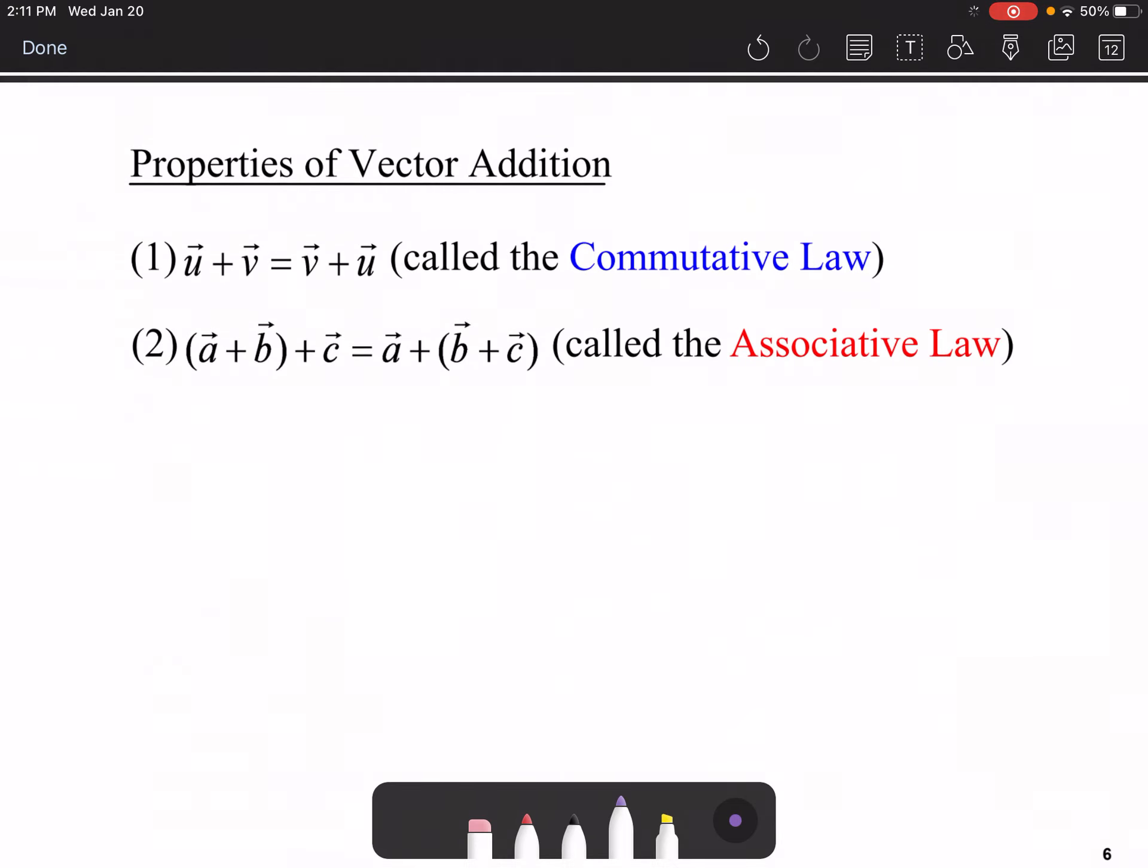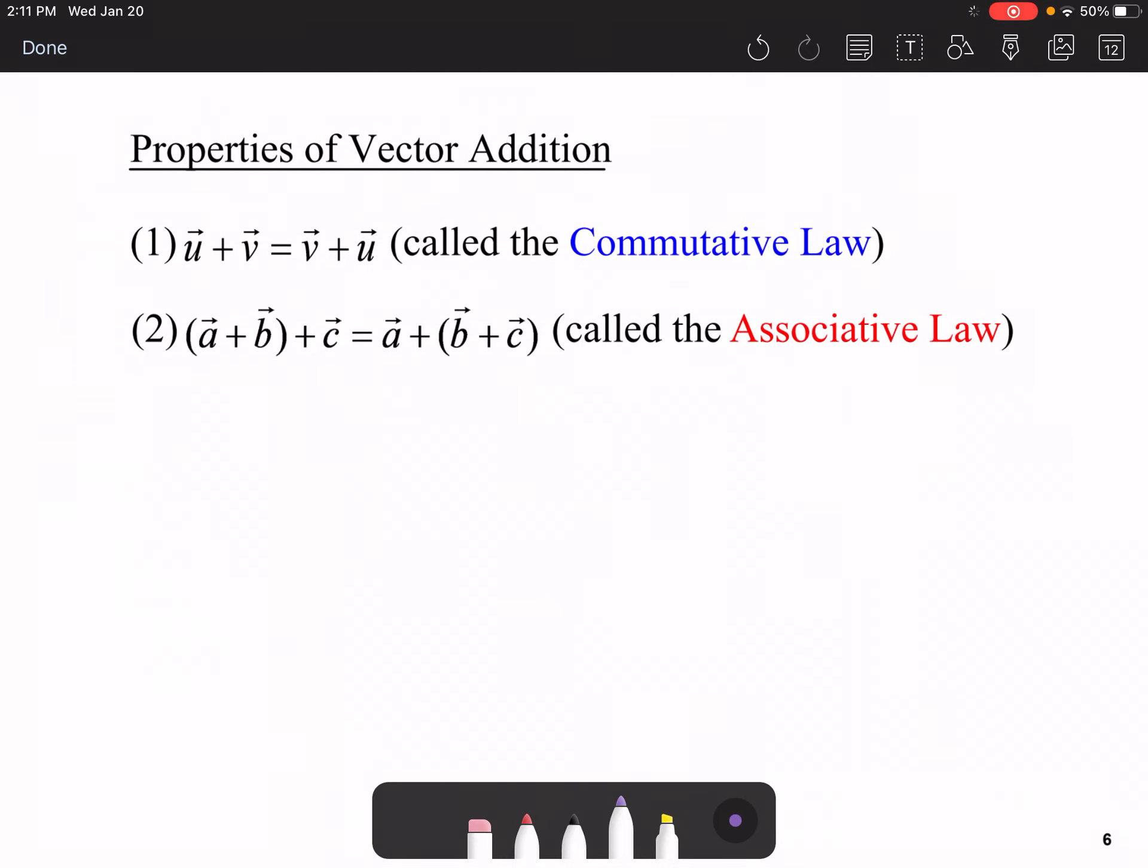This means there are some properties of vector addition. Just remember the properties you don't have to remember the names of these things. One possibility just stemming from what we saw here, any vector U plus V is the same as adding vector V plus U. It doesn't matter which order you add them in. This is called the commutative law. Another possibility is maybe you're adding three vectors. Well if you're adding three vectors all you have to do is add two of them first and then add the third one after that and the great thing is it doesn't matter which order you do this in. So you can add the two vectors A and B first and then add C, or you can add two vectors B and C first and then add the vector A. This is called the associative law.